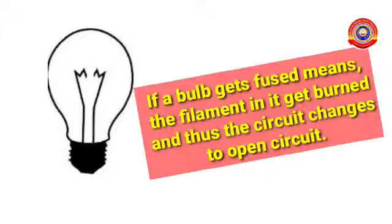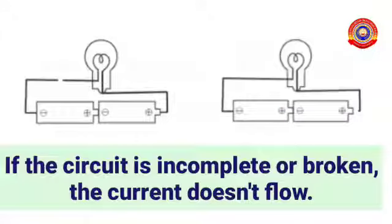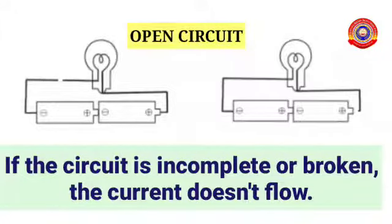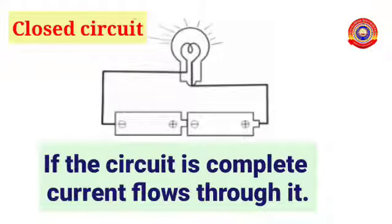Then what happens to a bulb when it fuses? Yes, if a bulb gets fused, it means the filament in it gets burned and thus the circuit changes to open circuit from closed circuit. So we can say if the circuit is incomplete or broken, the current doesn't flow through it, so it is an open circuit. And if the circuit is complete, the current flows through it. It is a closed circuit.